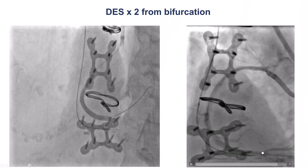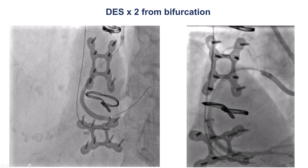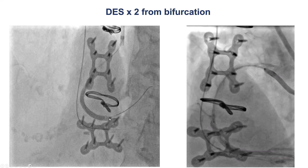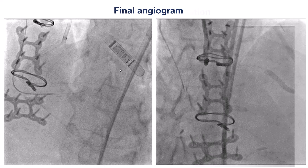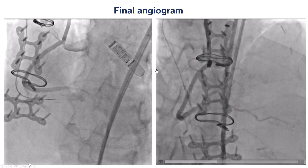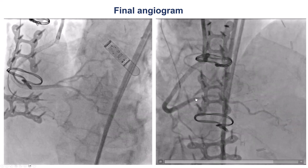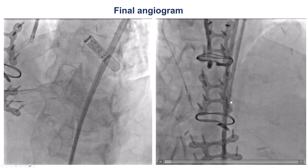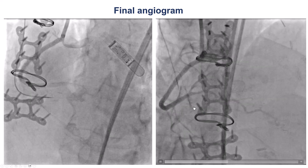We then stented all the way from the distal RCA to the proximal right coronary artery, and this provided a nice result. We had excellent flow in both the PDA and the right posterolateral.